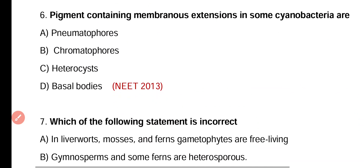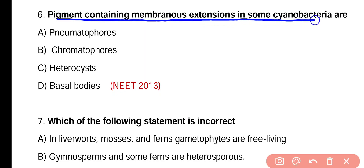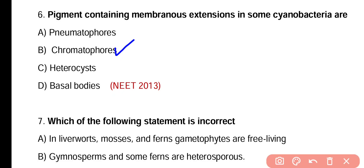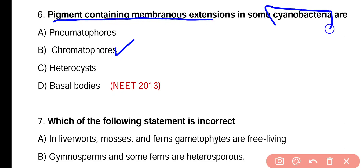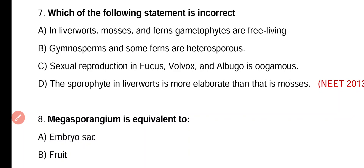Question 6. Pigment-containing membranous extensions in some cyanobacteria are: nematophore, chromatophore, heterocyst, or basal bodies. Correct answer is option B. Chromatophores are pigment-containing membranous extensions present in cyanobacteria and they help in photosynthesis.